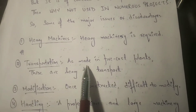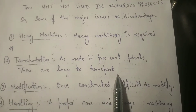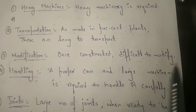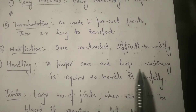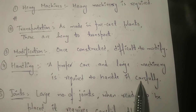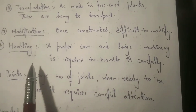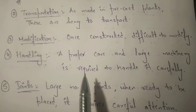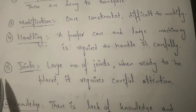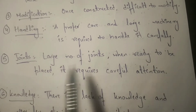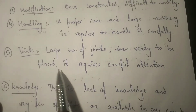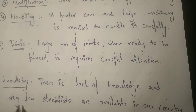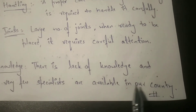Second, transportation issue — as they are made in precast plants, these are heavy to transport. Third, modification — once constructed, they are difficult to modify. Fourth, handling — proper care and large machinery is required to handle them carefully. As you have seen my slabs, they were of very small size, but even for them four men were required to shift and place one slab. Fifth, joints — a large number of joints arise when ready to be installed, requiring careful attention. Sixth, there is a lack of knowledge, and very few specialists are available in our country.